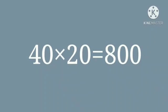For example, 40 into 20. Just multiply 4 into 2, which is equal to 8, and give two zeros after the product, that is after the 8. So the answer is 800.